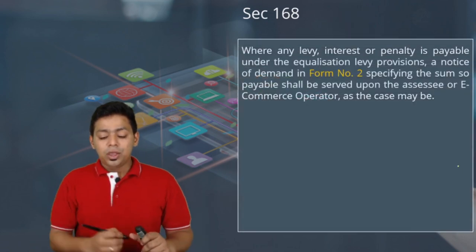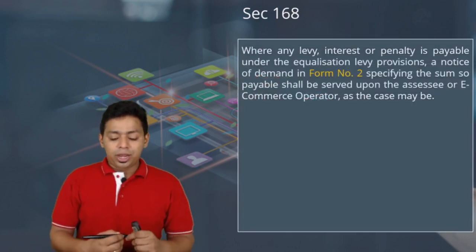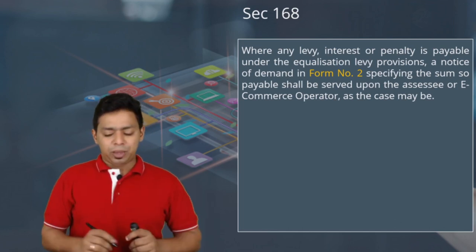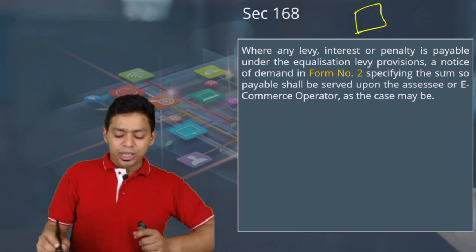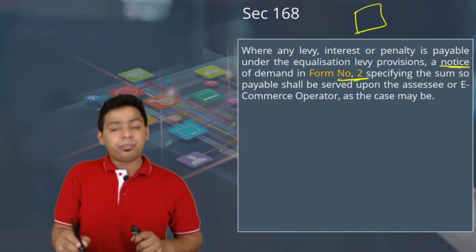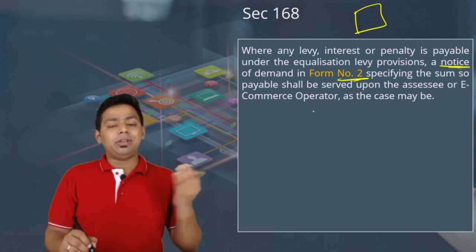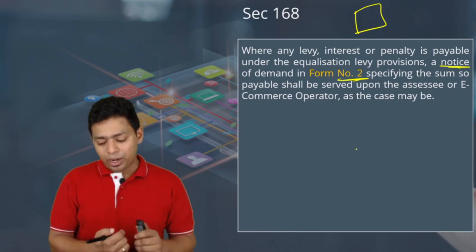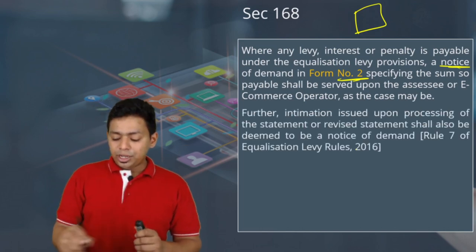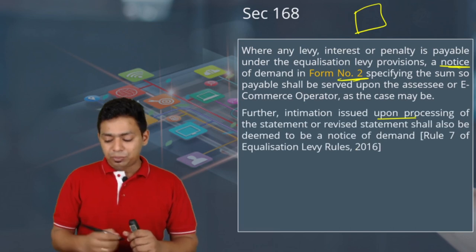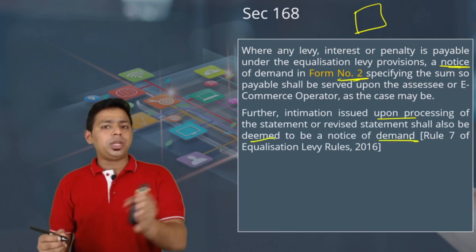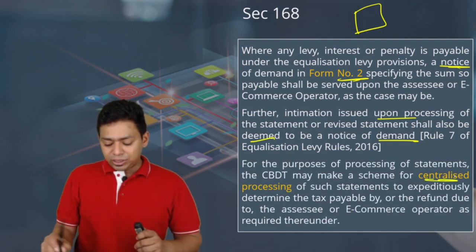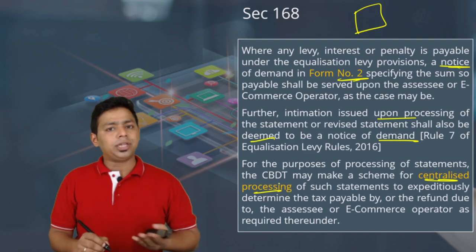If any levy, interest, or penalty is payable, a demand notice will be served in Form Number 2. Form Number 1 is the statement; Form Number 2 is the notice of demand. The intimation issued upon processing the statement shall also be deemed to be a notice of demand. The government may also make a scheme for centralized processing — we already have centralized processing schemes.